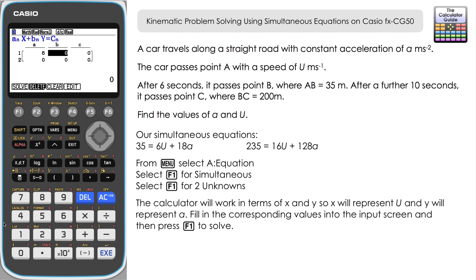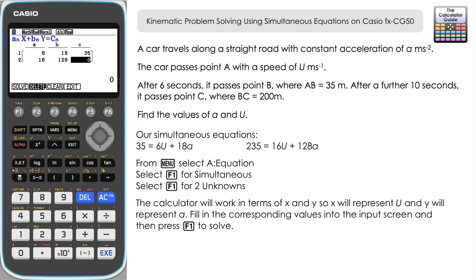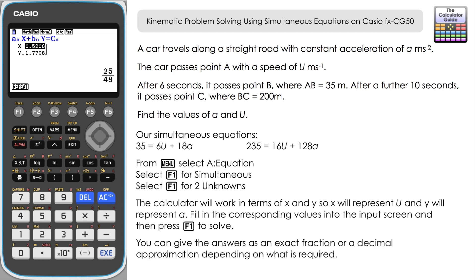We've got 18A which means 18Y, so B is 18, and C is the constant 35. For the second equation we've got 16U plus 128A, so C is 235. Once all the information is entered, press F1 to solve. We have our values X and Y — that's U and A. So U equals 25 over 48, or 0.521 to three decimal places, in meters per second — we can give either the exact fraction or decimal approximation.